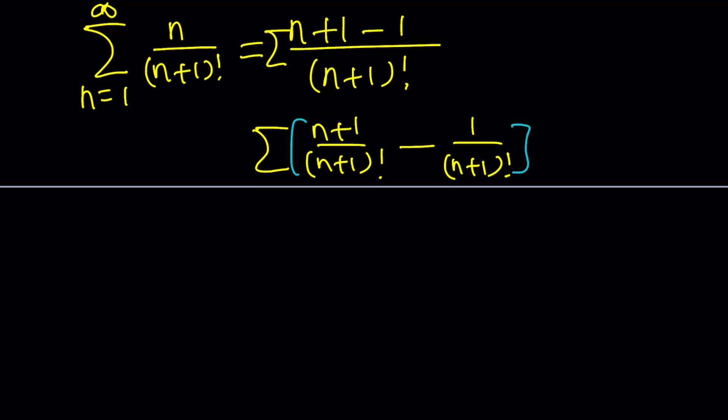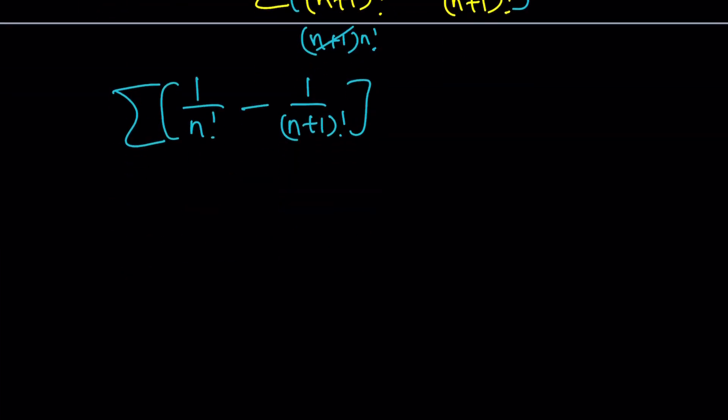How? Well, n plus 1 factorial can be written as n plus 1 times n factorial. n plus 1 cancels out. And here we end up with 1 over n factorial. And then, from that, you can subtract n plus 1 factorial. To get a better idea how this is going to telescope, we can go ahead and separate the sigmas. And now I can go ahead and write my limits. And then, this is going to become just awesome. Take a look.